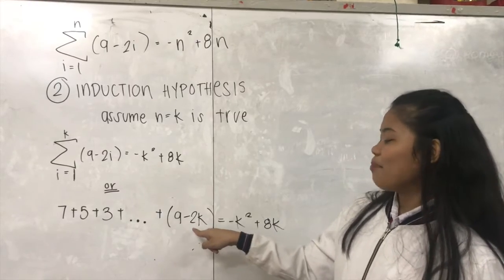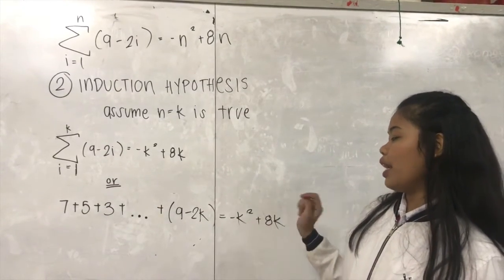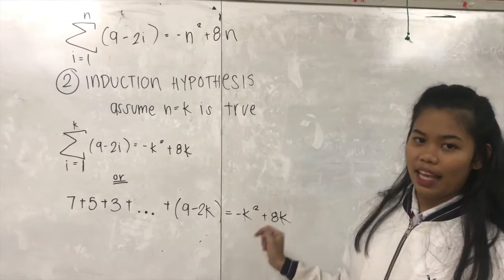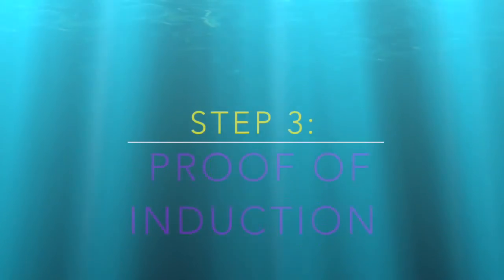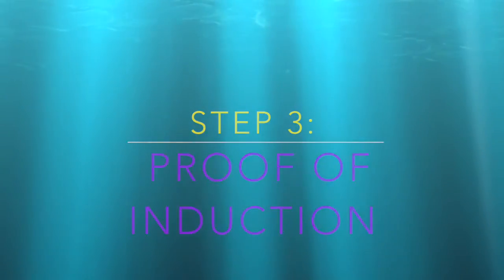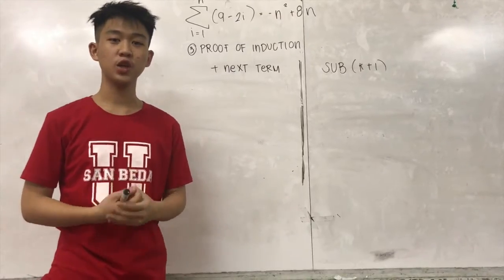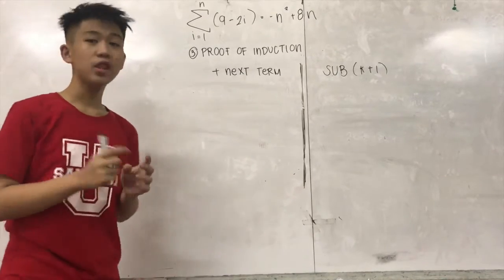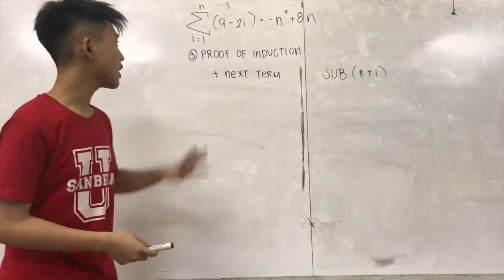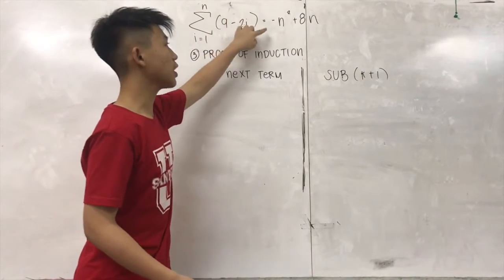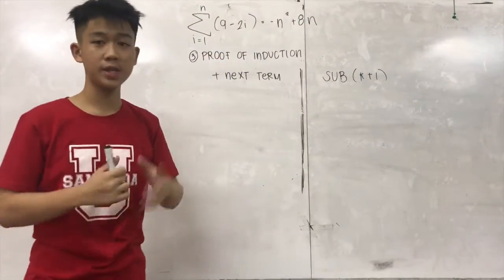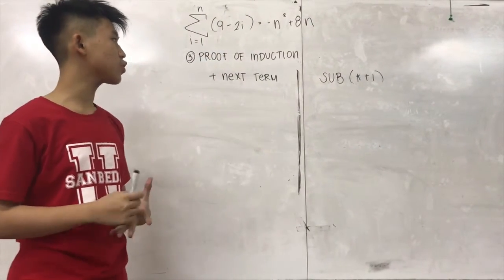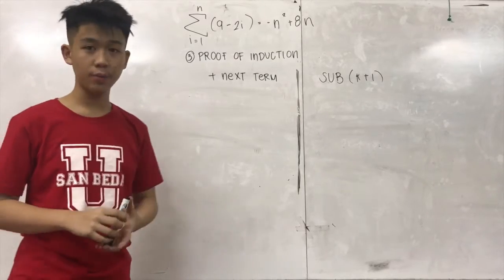Up to 9 minus 2K equals to negative K squared plus 8K. And the other process is we will substitute K to K plus 1.